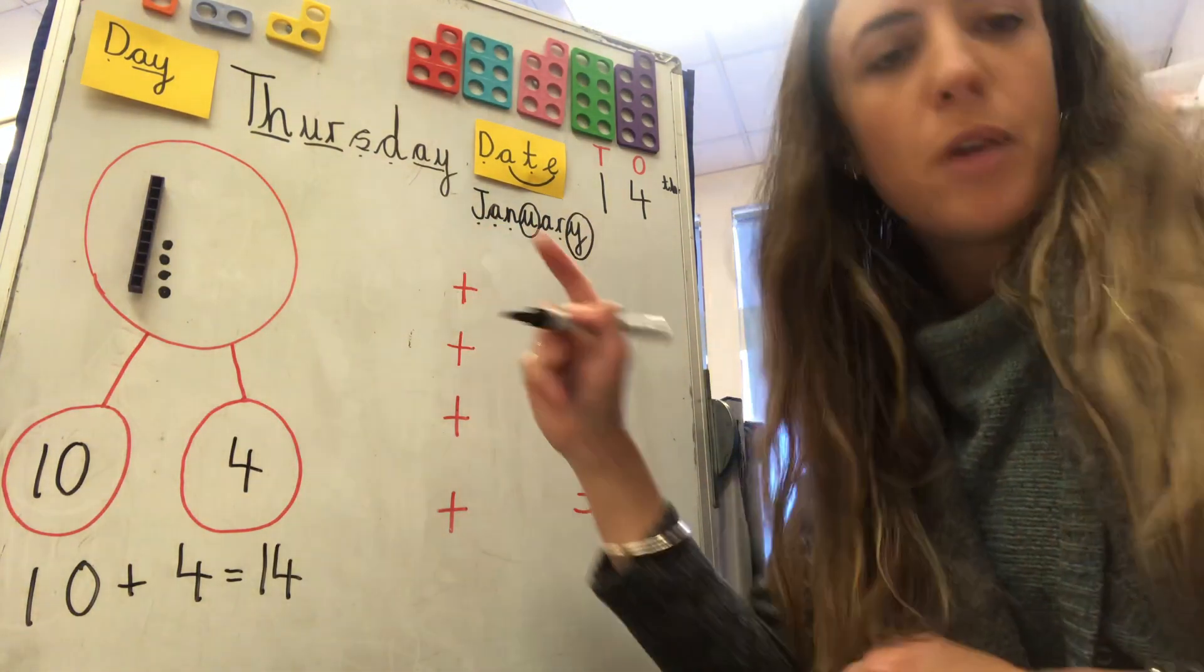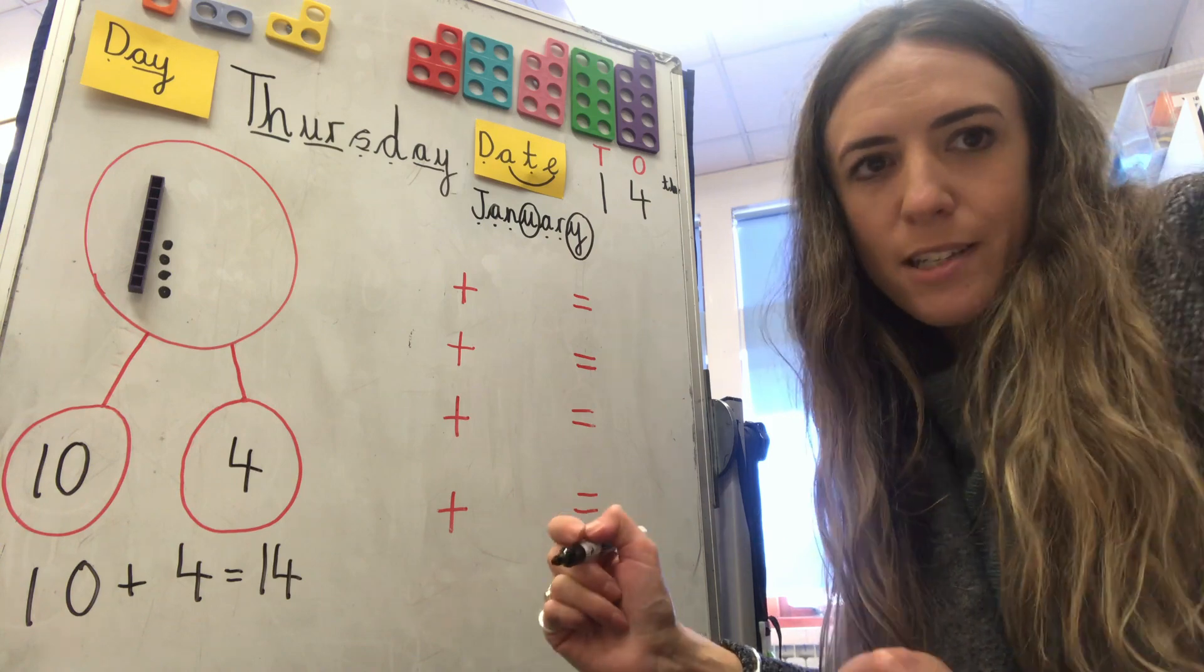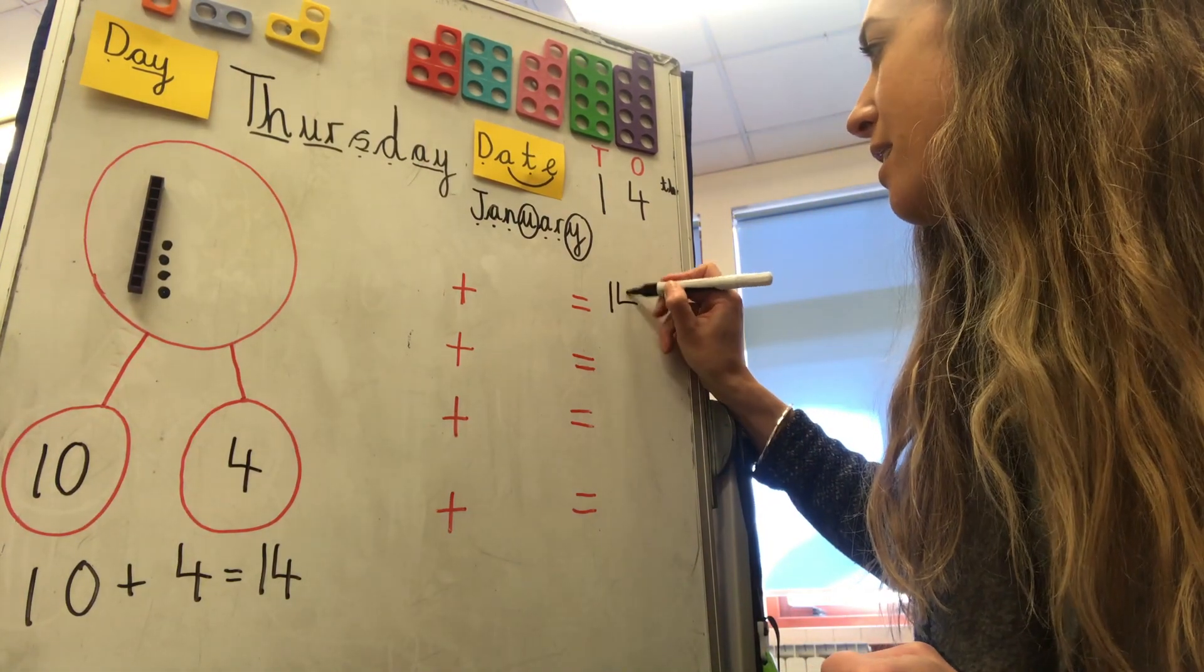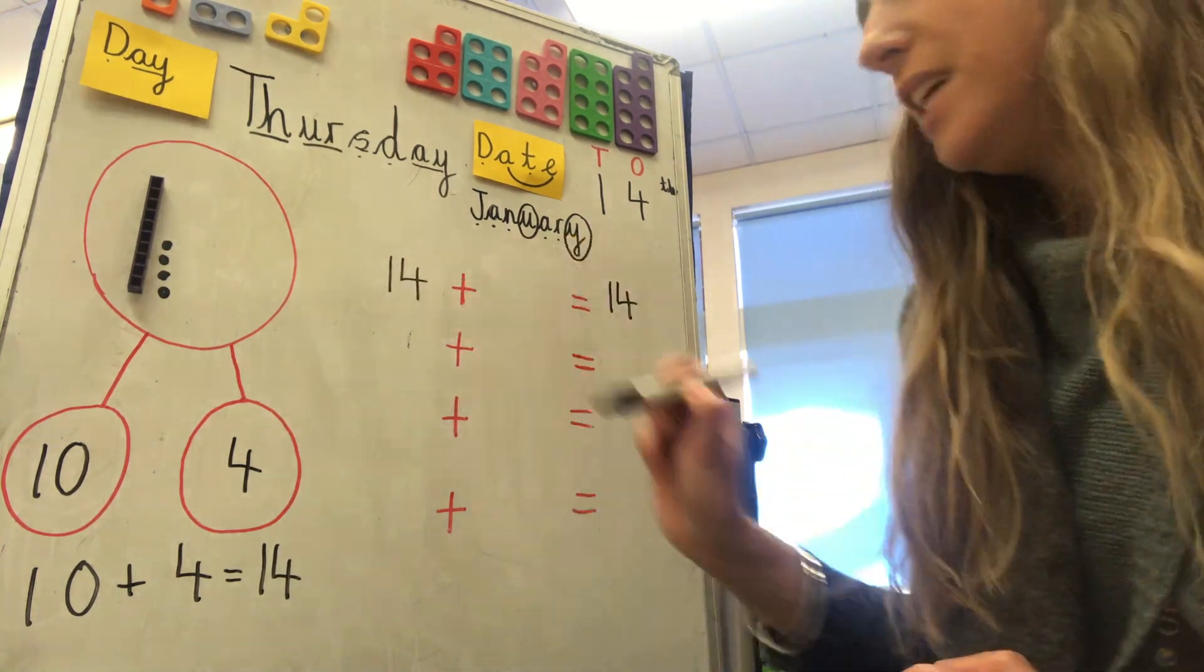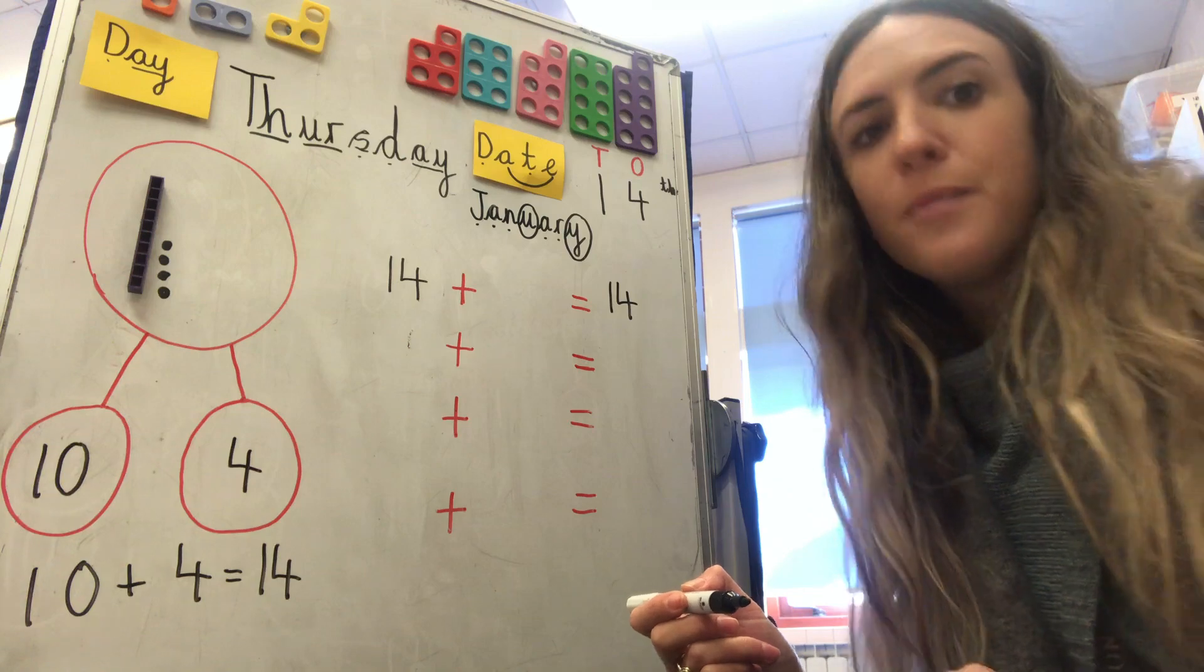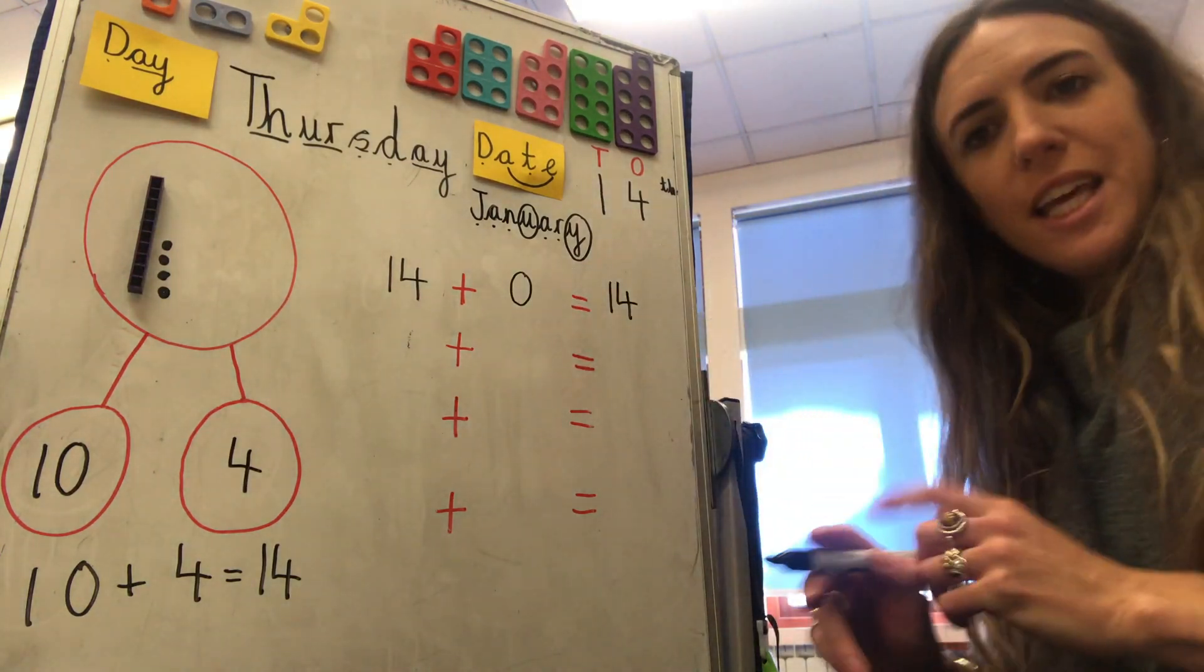Okay, I'm going to do another one. I'm starting with the biggest number that I could use, so that I have fourteen altogether. Great, that's fourteen. Add how many? Zero. Well done. Add zero, equals fourteen.